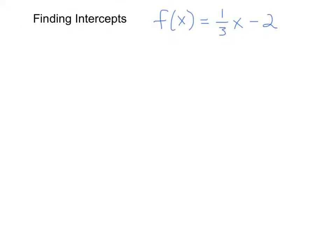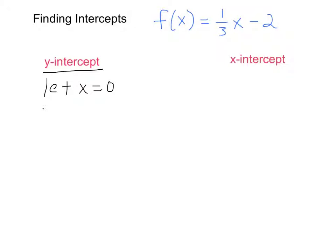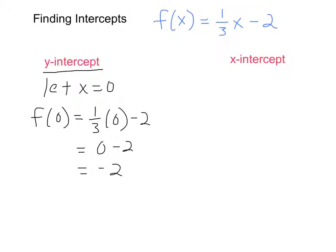We talked before about finding x and y-intercepts, and I want to review this in the context of functional notation. Here we have f of x equals one-third x minus 2. To find the y-intercept, we let x equal 0, meaning we evaluate f of 0: one-third times 0 minus 2 equals negative 2. On intercepts, always give your answer as an ordered pair.